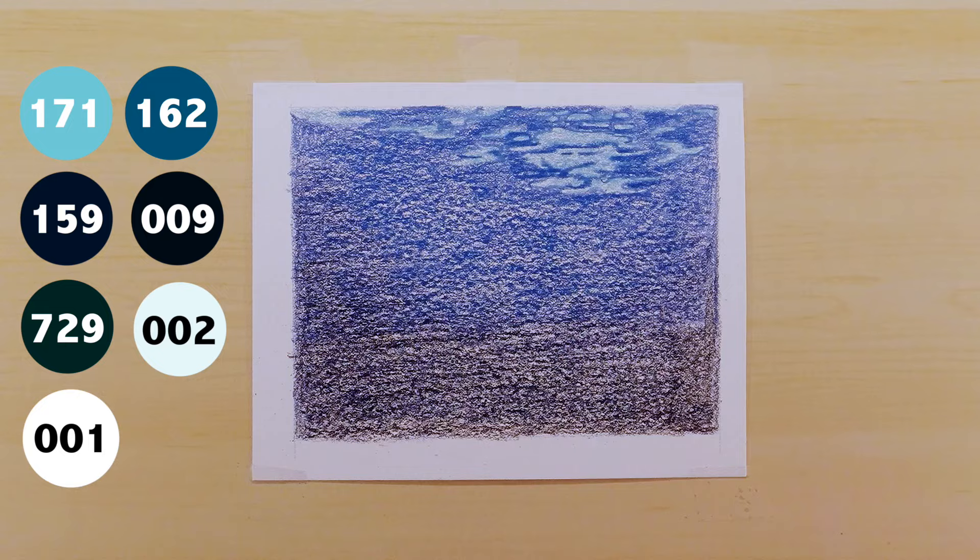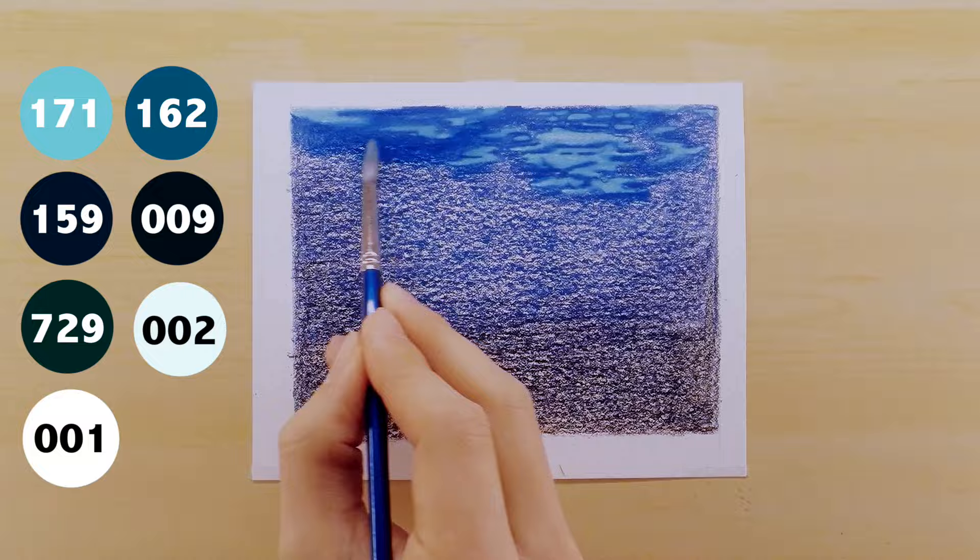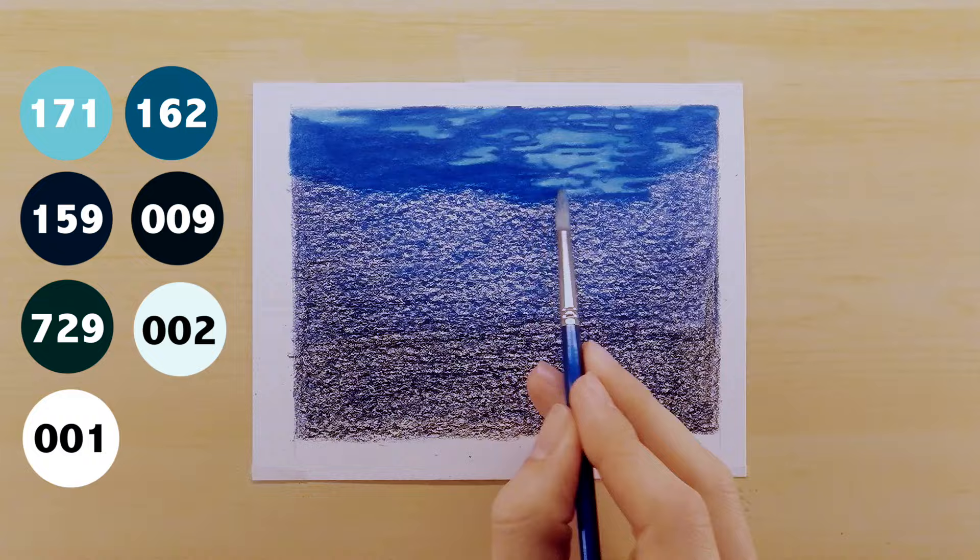Now here I'm going through with my odorless paint thinner in my number eight round brush, the same brush that I always use to do this, and I'm just blending everything out. You can see that the light blue and the dark blue have become really contrasted and it really started to look nice at this point.